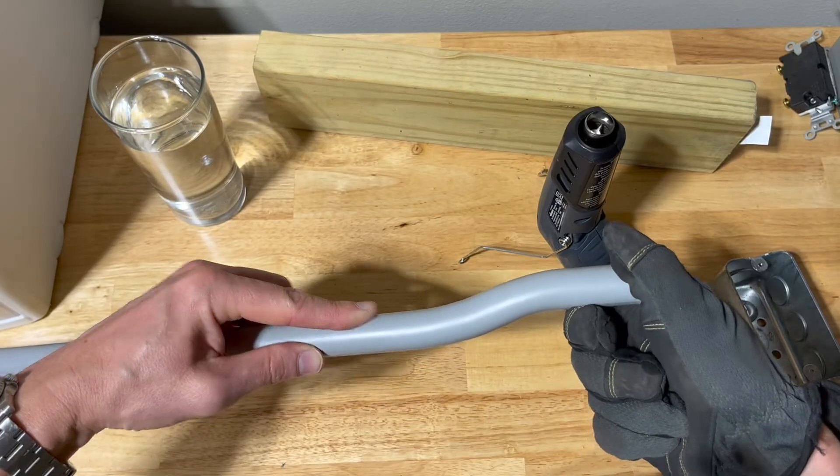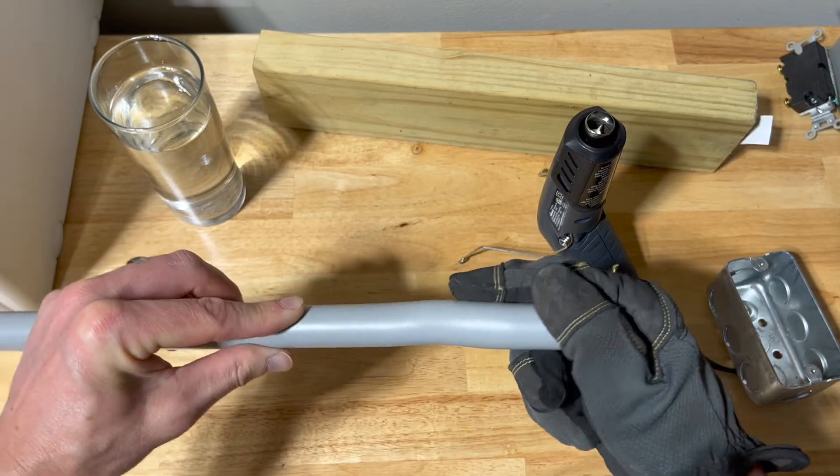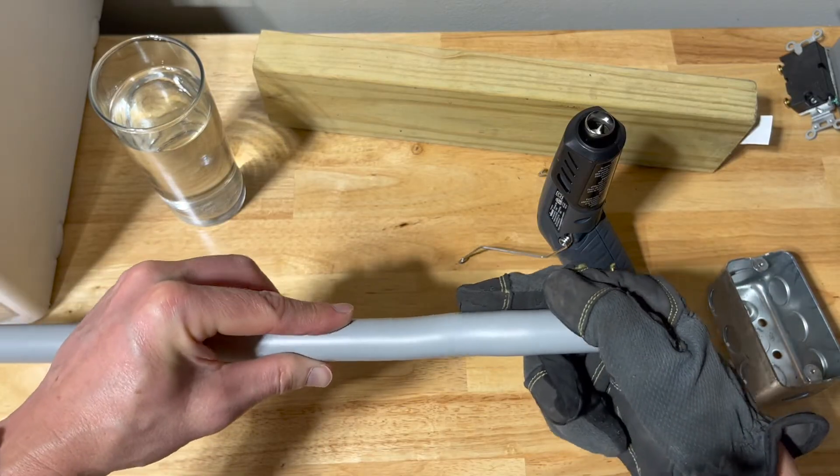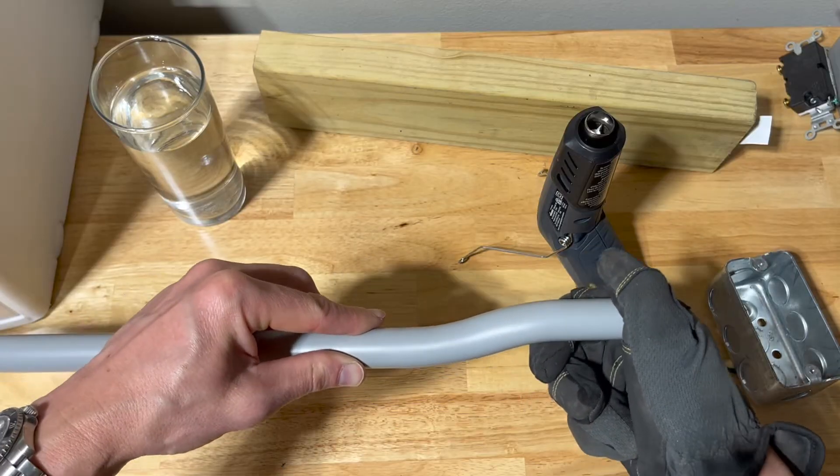Typically, I do this outside with a hose and I just spray it immediately to lock in that bend, but because I'm just dipping it in a cup of water here, I've got to kind of hold it there for a second to make sure it doesn't unbend.